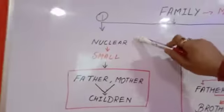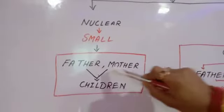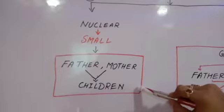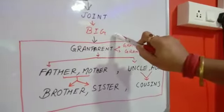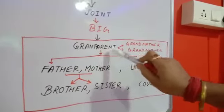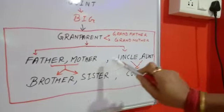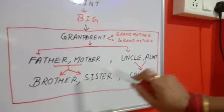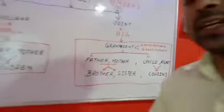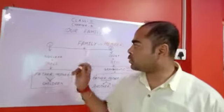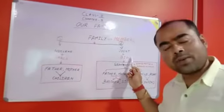Let's repeat it. Nuclear family is a small family where father and mother are living with their children. And joint family is a big family which comprises grandparents such as grandfather and grandmother, father, mother, uncle, aunt, brother, sister and cousins. So there are two types of family — one is nuclear family and another one is joint family.